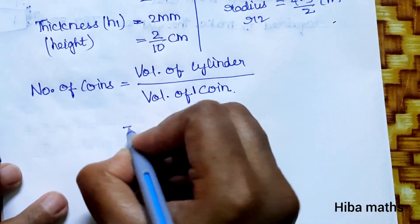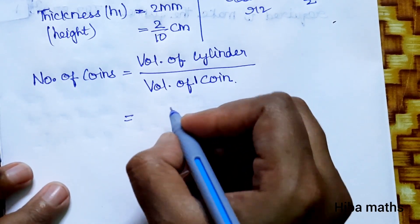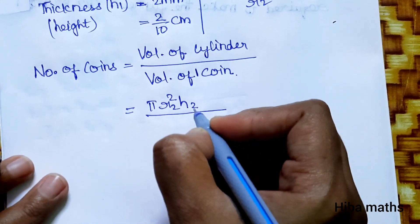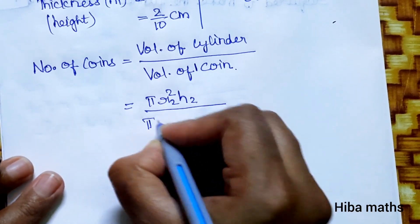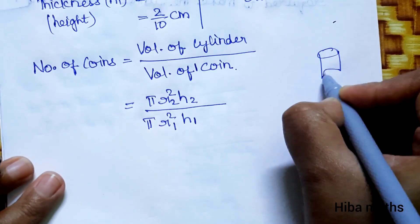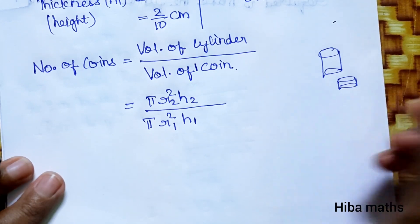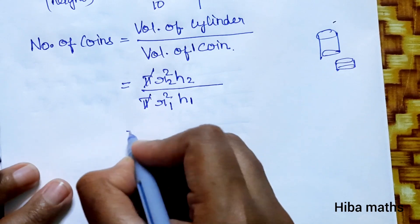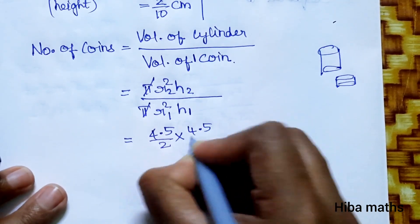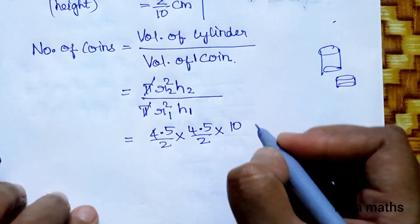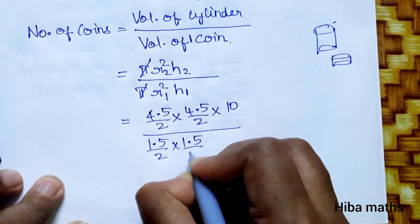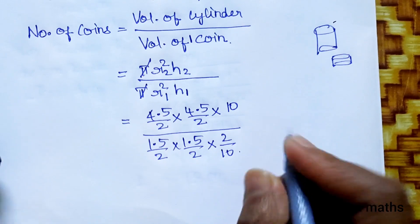Volume of cylinder is πr²h. So π times r2 squared times h2. Volume of coin is π times r1 squared times h1. Here are two cylindrical forms. Pi pi cancel.